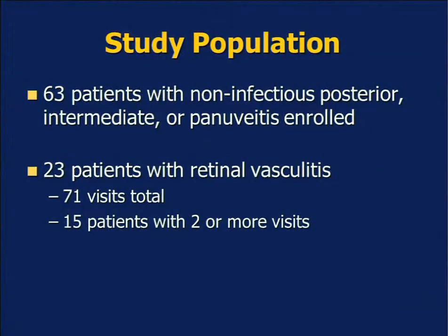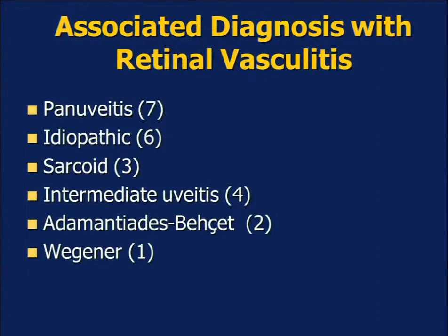The study population was 63 patients with non-infectious posterior, intermediate, or pan-uveitis. Among them, 23 had retinal vasculitis, for a total of 71 visits, with 15 patients having two or more visits. Among the diagnoses for retinal vasculitis, common causes such as sarcoidosis and intermediate uveitis were noted.